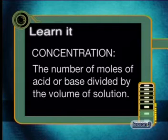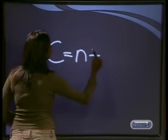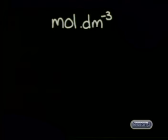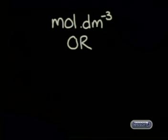In order to compare and measure how dilute an acid or a base is, chemists define concentration as the number of moles of acid or base divided by the volume of solution. We can write this as a simple formula: C equals N divided by V. The units of concentration are moles per decimeter cubed, written as mol·dm⁻³. There is also a shorthand symbol: instead of writing mole per decimeter cubed, chemists write capital M, which stands for molar.